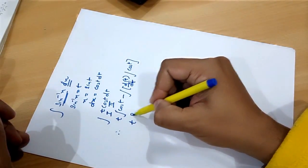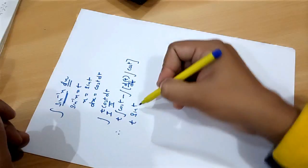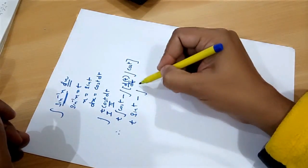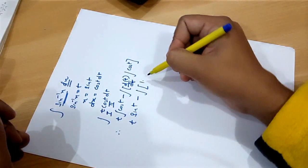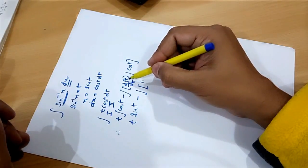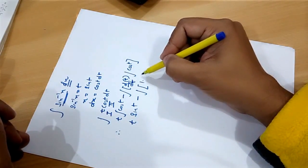So, this will give me t sine t minus 1 because differentiation of t will give me 1 and integration of cos t will give me sine t.